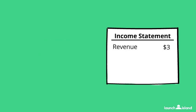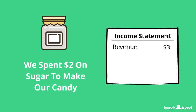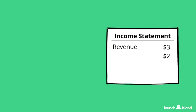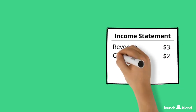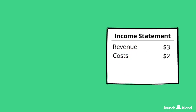Now we have $3, but don't forget we had to make our candy. We also spent $2 on sugar. So let's write that down too. These are called our costs. Remember how I told you grown-ups like to be fancy? Well, they sometimes call costs expenses.